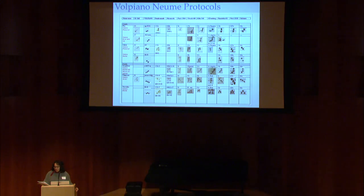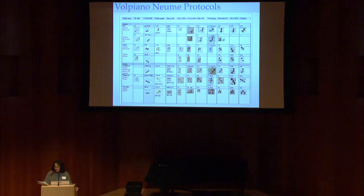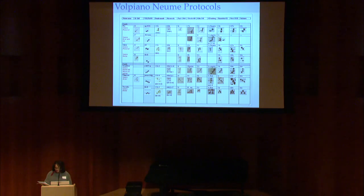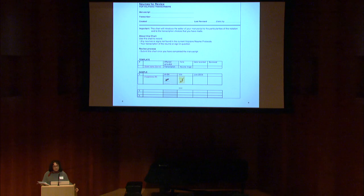One of the problems with a document like the Volpiano Noom protocols is that it was built outwards from a set of pre-selected manuscripts that were studied and compared to provide transcription suggestions. With crowdsourced content, it's not always feasible to study a manuscript in advance and provide Noom transcription recommendations. As more and more manuscripts are indexed in Cantus and more melodies added, the Volpiano Noom protocols function more as a record of decisions made than as an exhaustive guide. That said, there is a supplementary document available on the Cantus database that allows each contributor to record their own Noom transcription choices, and each contributor is encouraged to provide this document upon completion of the manuscript as a resource for the editor.